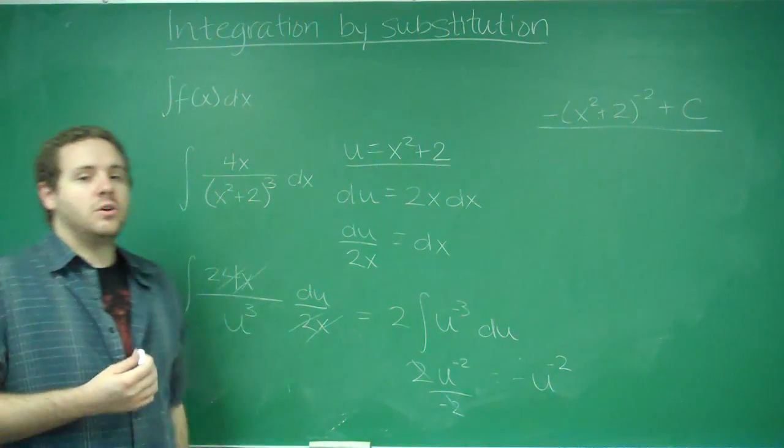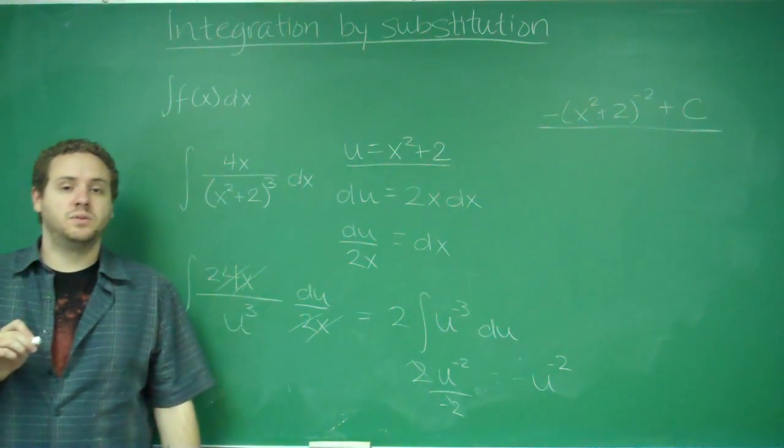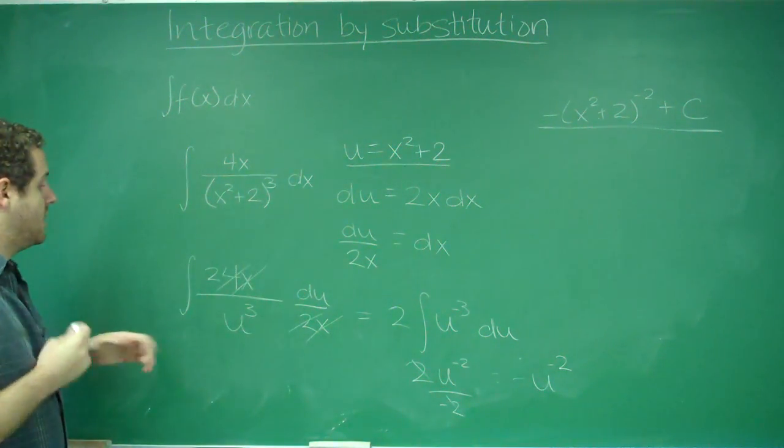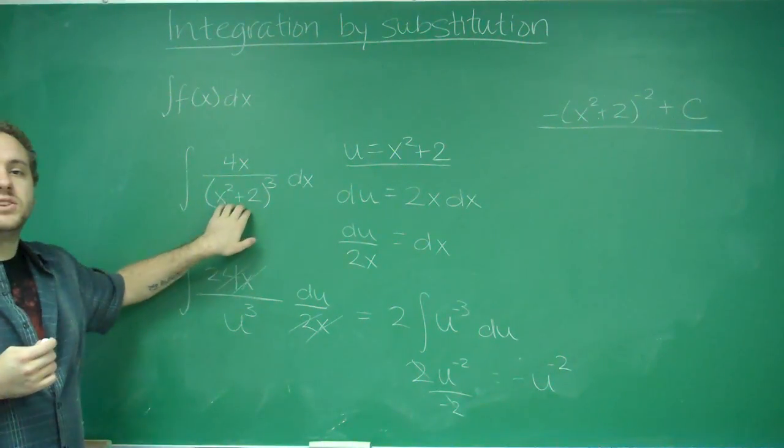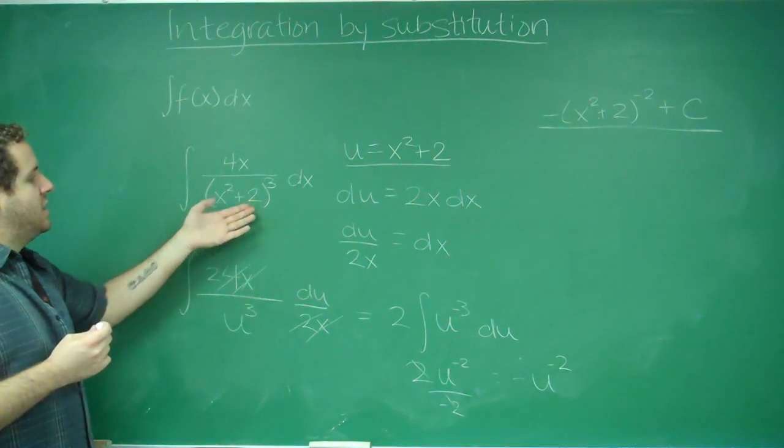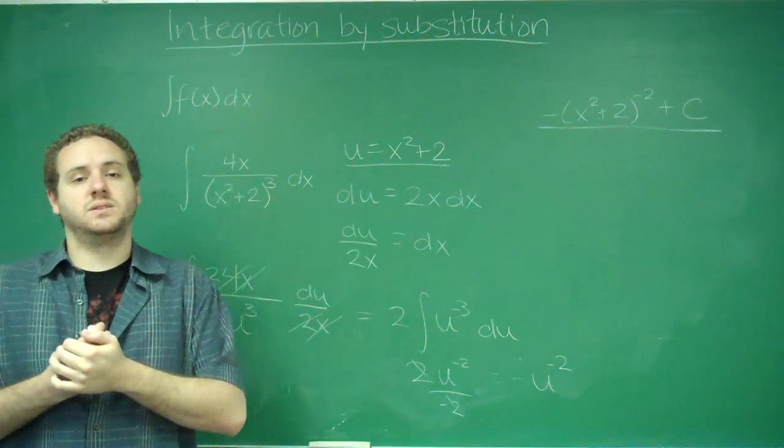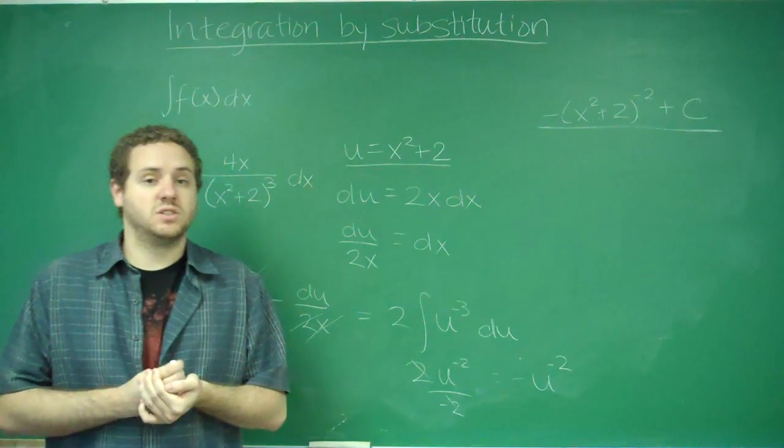If you have something to a power, you always do not want to include the power in u. You want to make it just the base, and the reason for that is, first of all, if you just call this u, and the rest cancels out, you just get u to a power, and if you have anything just to a power, that's a really easy antiderivative, and you can just solve it from there.